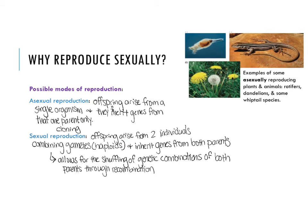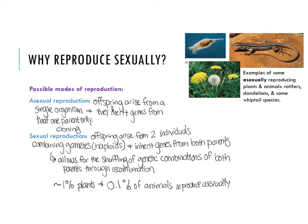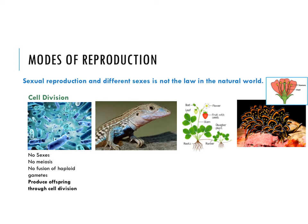Asexual reproduction — in terms of a reproductive strategy, not a sexual orientation — is somewhat common in the organisms we tend to focus on: about 1% of plants and about 0.1% of animals, though it's way more common in other groups. The point here is that sexual reproduction and having different sexes, the human 'normal,' is not necessarily normal across the natural world. There are lots of different ways of reproducing.